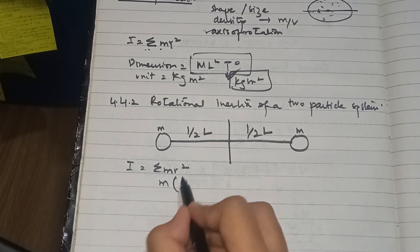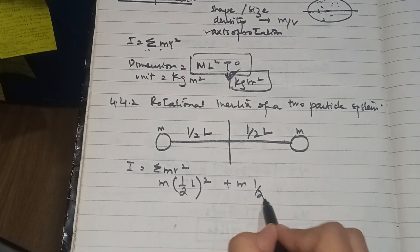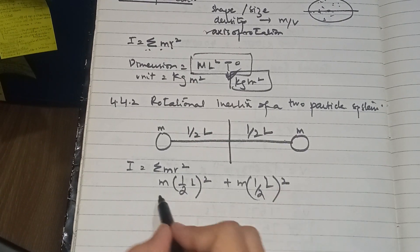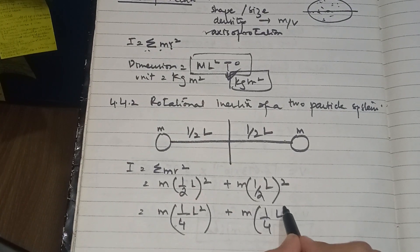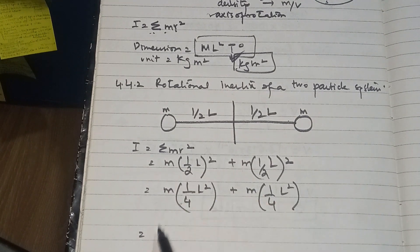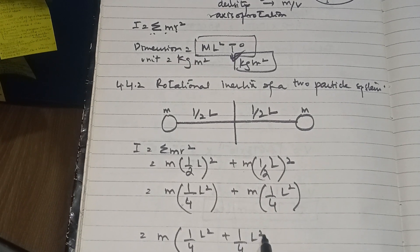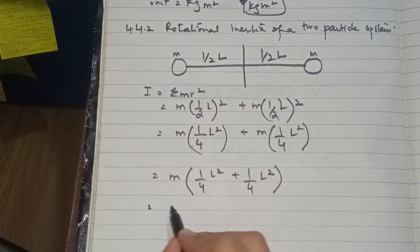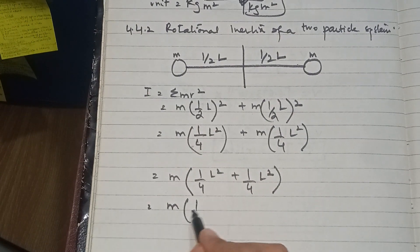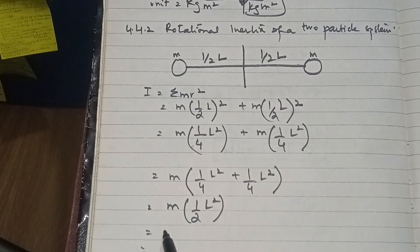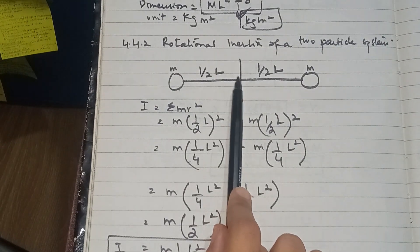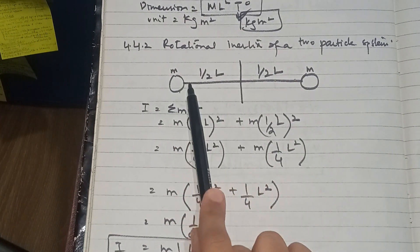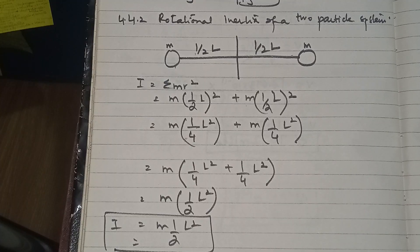We write: I = m(L/2)² + m(L/2)² = m(L²/4) + m(L²/4). Taking m common: m(1/4 L² + 1/4 L²) = m(1/2 L²) = ½mL². So the moment of inertia for two particles each at distance L/2 from the axis is ½mL².